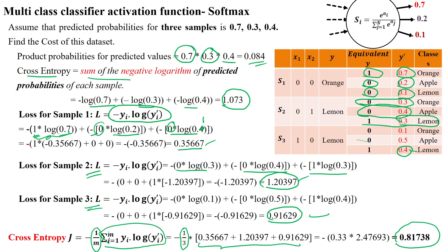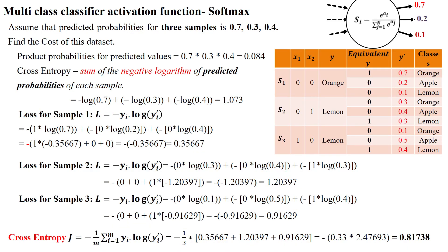The final cross-entropy loss of 0.81738 indicates misclassified samples — two samples were misclassified as apple. This results in a high loss. If the samples were correctly classified, there would be a higher maximum likelihood probability in samples two and three, reducing the error. Thanks for watching.